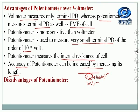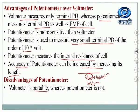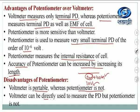What are the disadvantages of the potentiometer? A voltmeter is a portable device — we can carry it from one place to another. Whereas a potentiometer is not portable, because it requires a long wire fixed on a wooden support. Also, a voltmeter can be directly connected in the circuit to note down readings, but a potentiometer cannot be directly used — we have to connect it, find out the corresponding lengths, and then calculate the terminal potential difference, EMF, or comparison of EMFs.